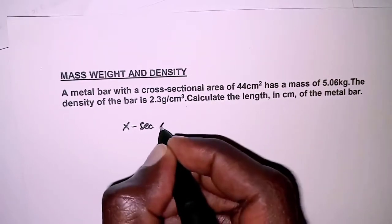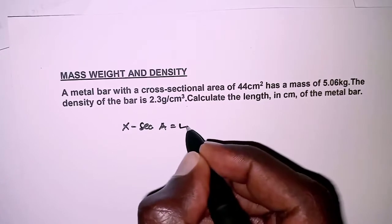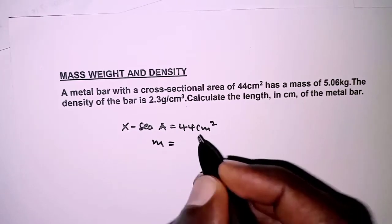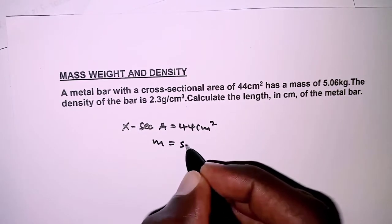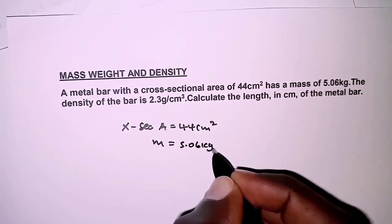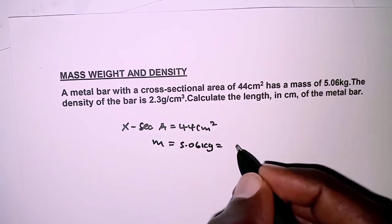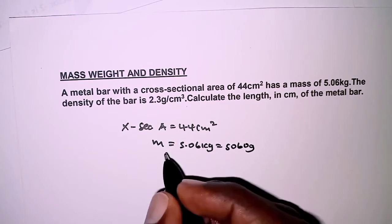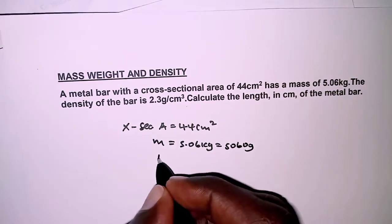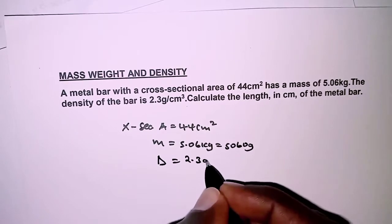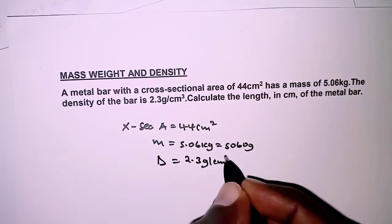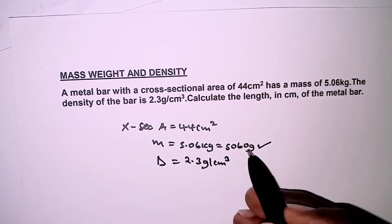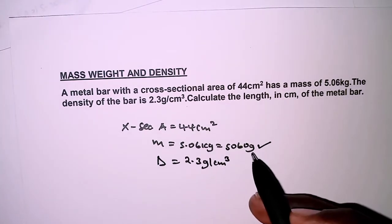In the question we are told that the cross-sectional area is 44 square centimeters and that the mass of the metal bar is 5.06 kilograms. This expressed in grams is 5060 grams, multiplying by a thousand. We also know that the density is 2.3 grams per cubic centimeter. I did the conversion here so that we may have the units matching.